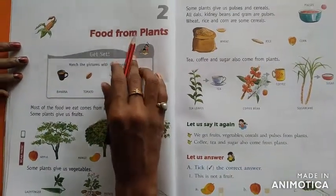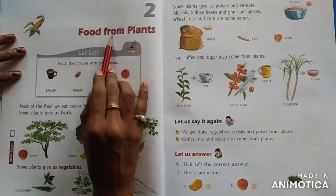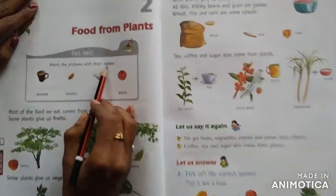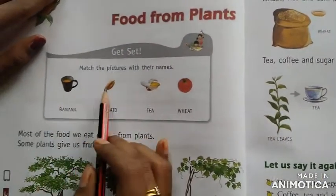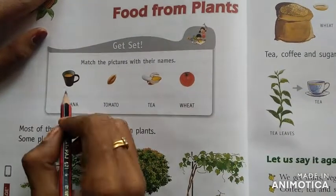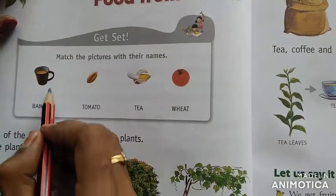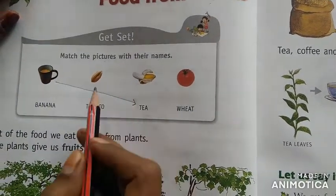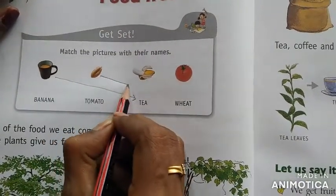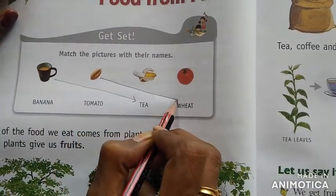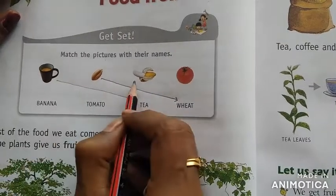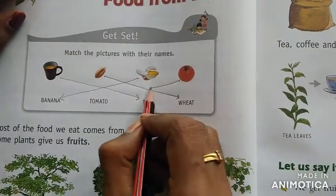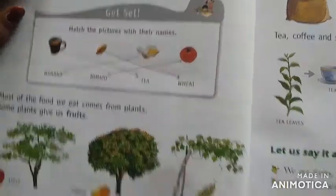Let's write the textbook work of the second lesson also. The second lesson is Food from Plants. Match the pictures with their names. The first one is Tea — match Tea. Next is Wheat — find the spelling of Wheat and match it. Next is Banana — match Banana. The last one is Tomato — match Tomato.